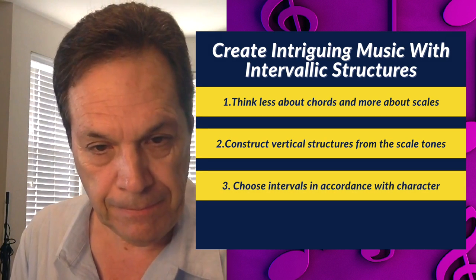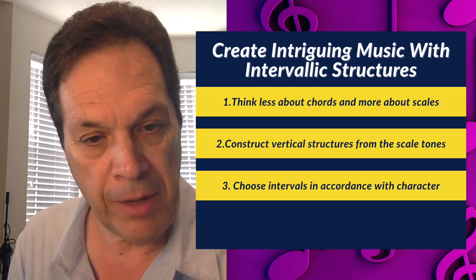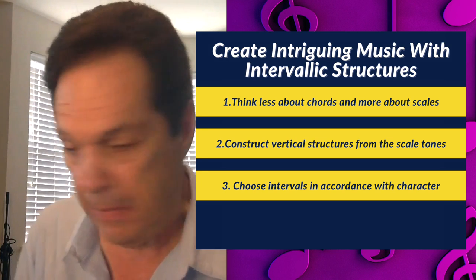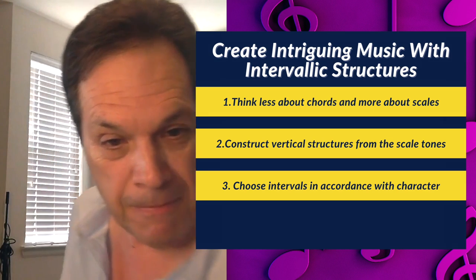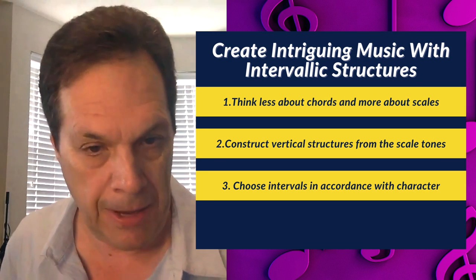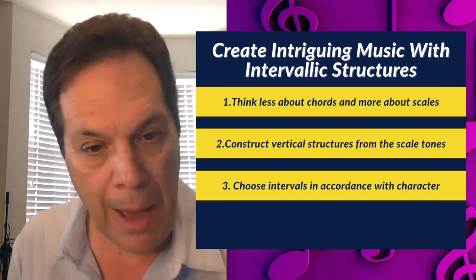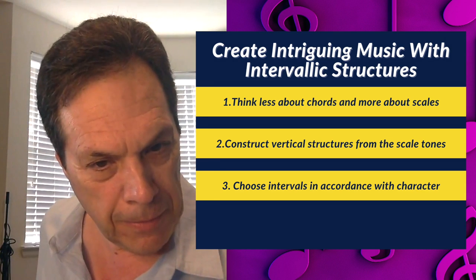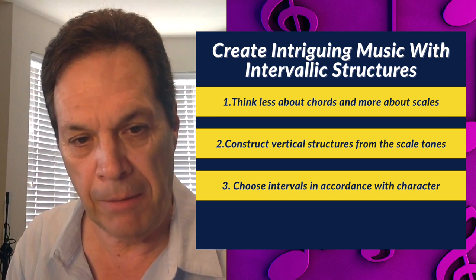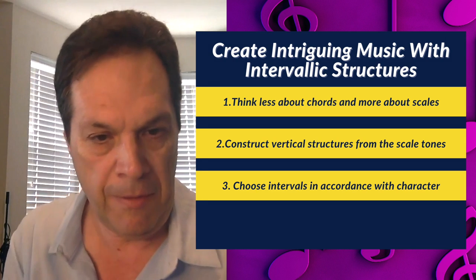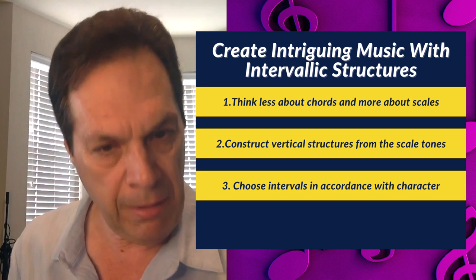Point three: choose intervals in accordance with character. For example, if you want a wide, expansive sound, you might choose stacked fifths. That's all the notes in C Lydian, and you can hear the panoramic sense of it. And you can do the opposite — you can crunch things up. When we tend to think about chords, sometimes we're not always thinking about the intervallic structures within them. That's why intervals are really important and how they can enhance or bring forth a certain character in music.